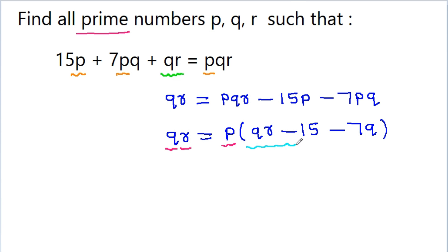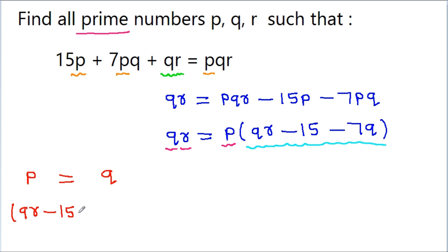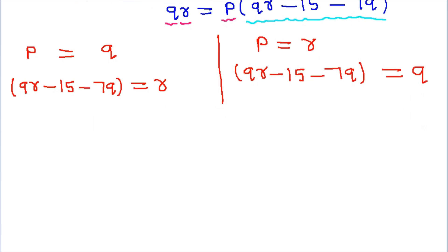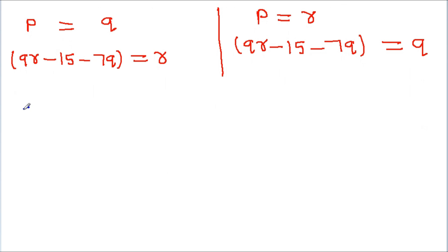So this product must be prime, and the two factors on the left must equal the two factors on the right. So either p = q and qr - 15 - 7q = r, or p = r and qr - 15 - 7q = q.